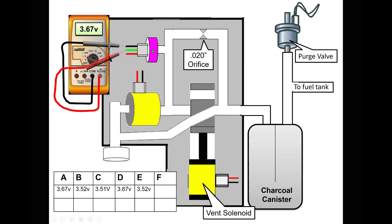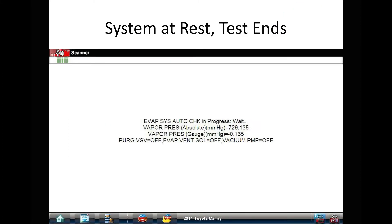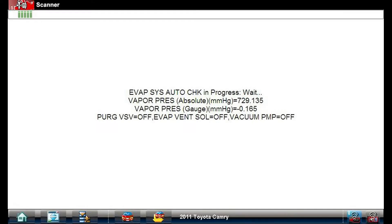Resting phase happens for a very short period. Everything turned off. Make sure we have atmospheric pressure in the tank. As long as everything goes according to plan, that's it. No trouble codes, system passes. Everything all turned off, trace vacuum 0.165 inches of water column. This vehicle has passed all its tests and will have set no pending trouble codes.